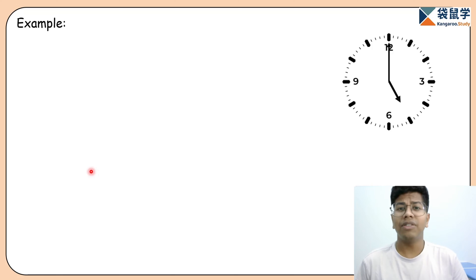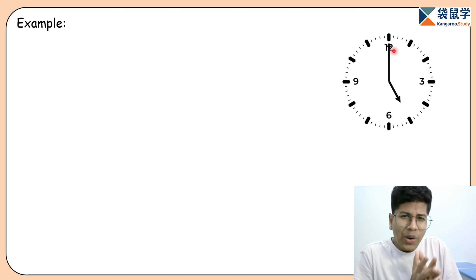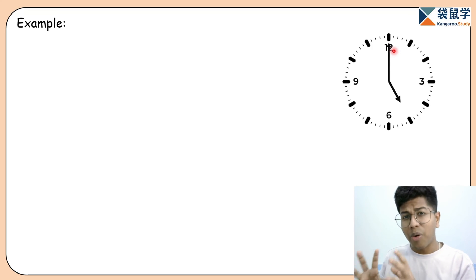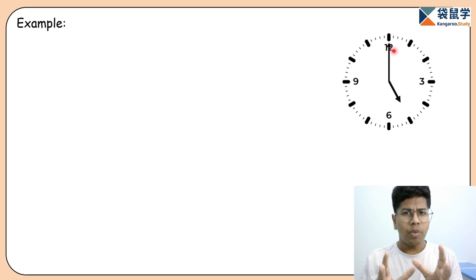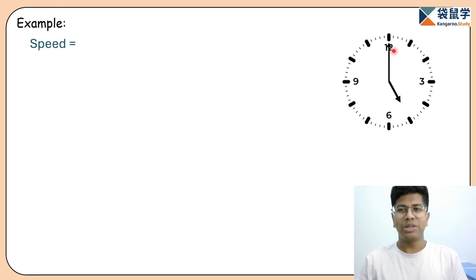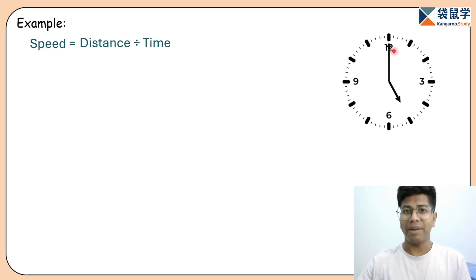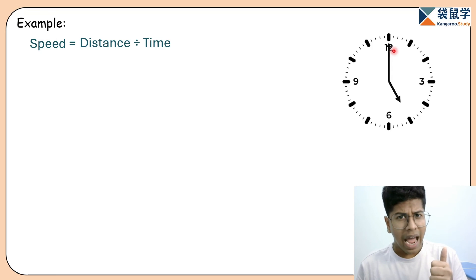Starting off with a simple question: how many intervals does a clock have? It's quite obvious — a clock has 12 intervals. Now the simple trick is we need to relate clock problems with travel problems, specifically chasing problems. In travel problems, the relation between speed, distance, and time is: speed equals distance divided by time. The same logic applies in clock problems as well.